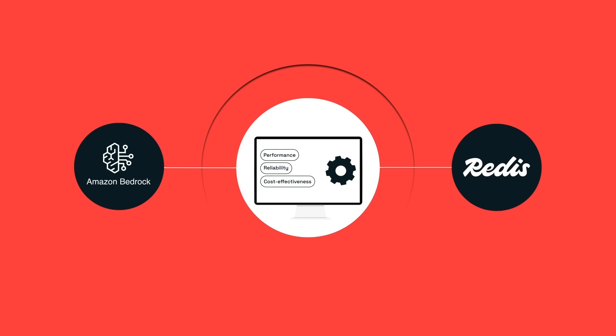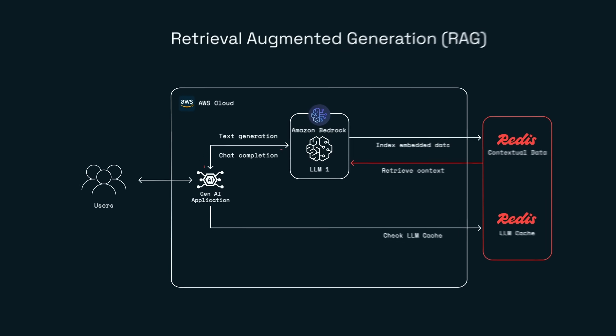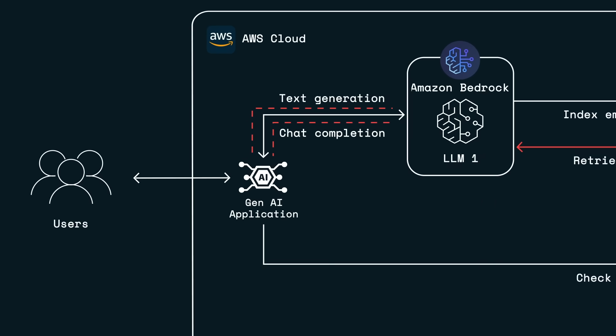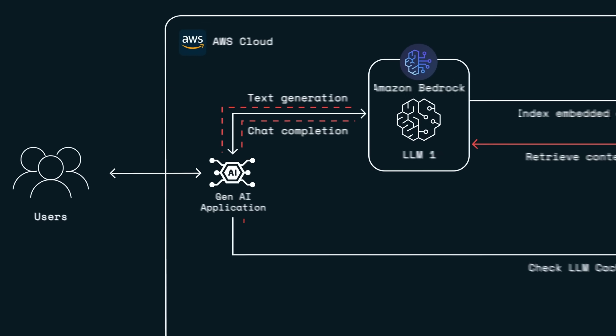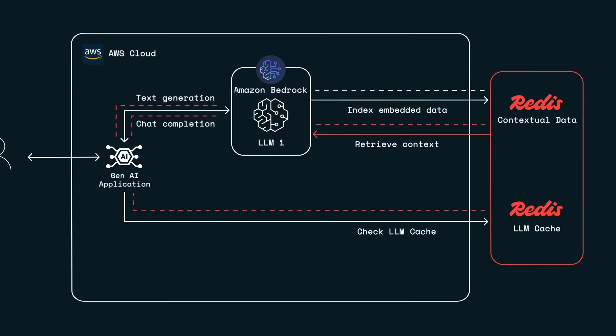You can now implement Retrieval Augmented Generation, or RAG, to search and retrieve relevant and most up-to-date context from domain-specific knowledge stored in Redis, improving response quality. Instead of burdening the LLM with every request, Redis Cloud serves as a semantic caching layer that can instantly return results if you've already got them cached, cutting down latency and costs.